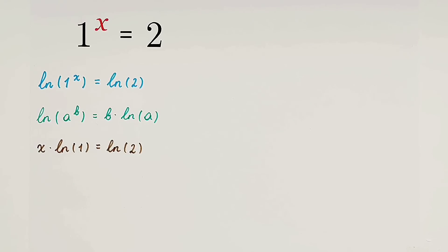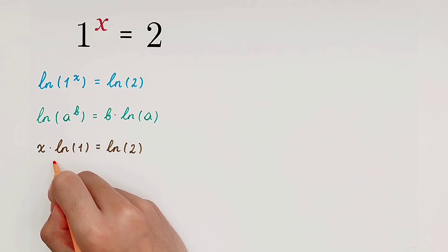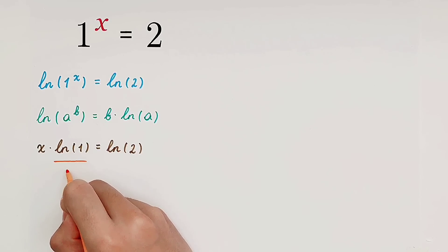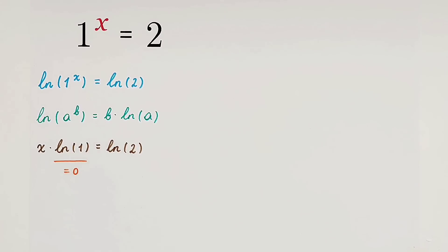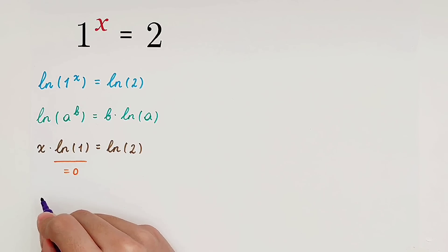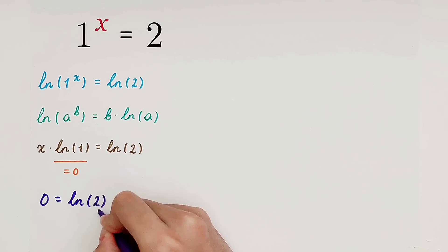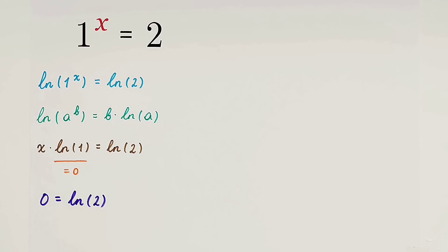The next step is very important: the natural log of 1 is equal to 0. And any number times 0 is equal to 0, so x times 0 is equal to 0. What can we get? The left-hand side is 0, and the right-hand side is the natural log of 2.